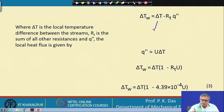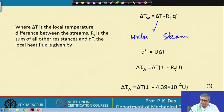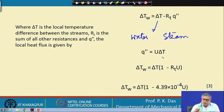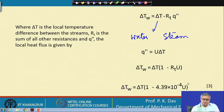This gives the temperature difference between water and steam, where delta T is the local temperature difference between the two streams, R_T is the sum of all the other resistances, and q double-prime is the local heat flux given by q equals U times delta T per unit area. Delta T_w is then obtained by this formula. Putting in all the values of R_T that we have calculated, we get this equation — equation 3 — which we use for iteration.